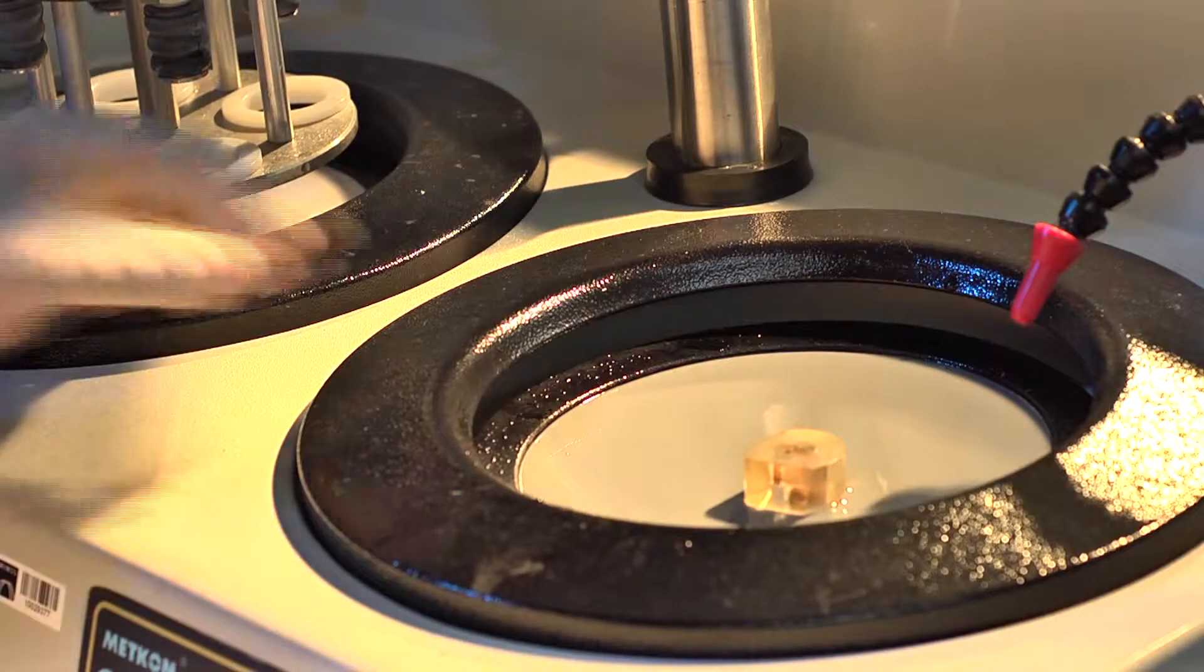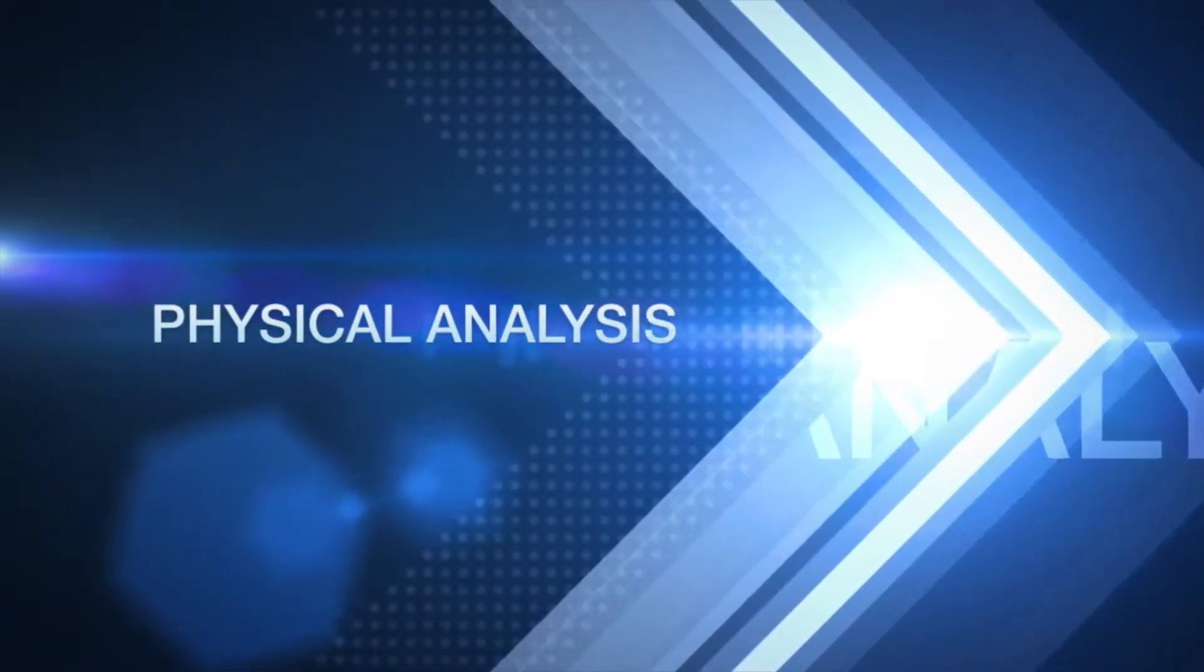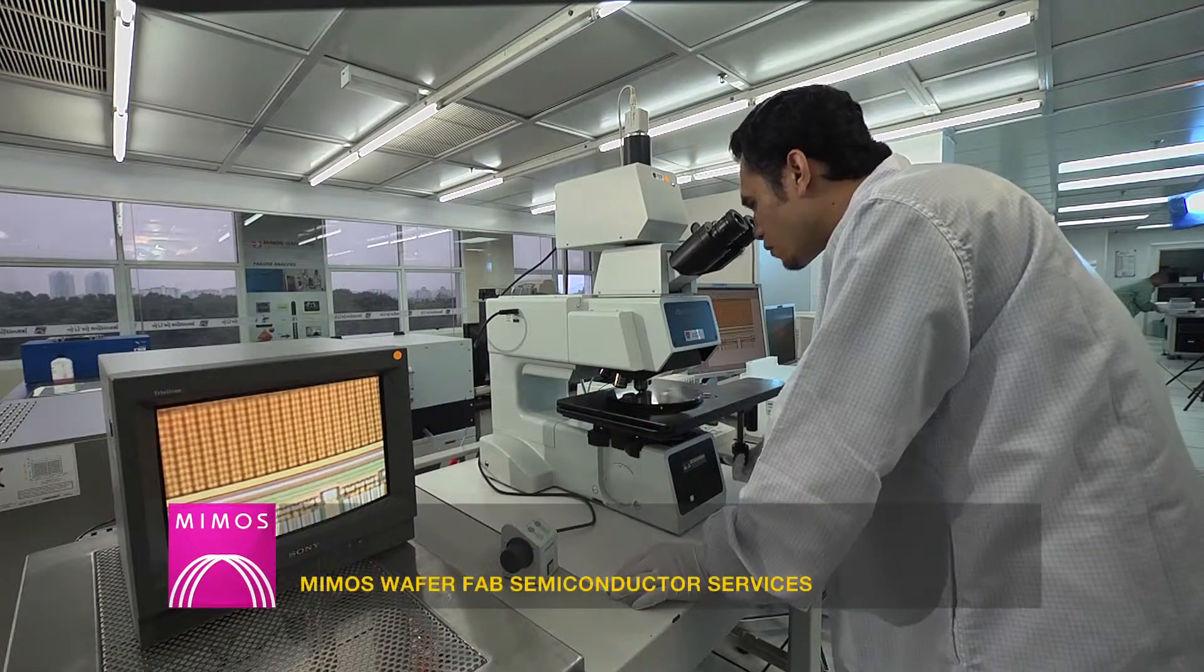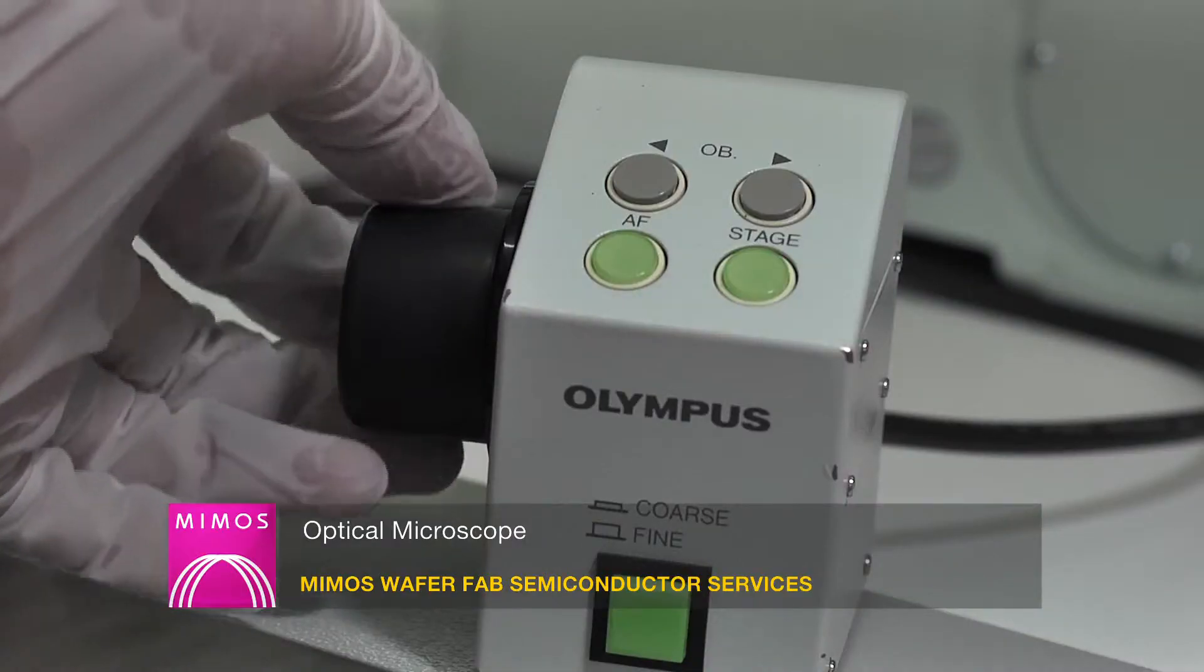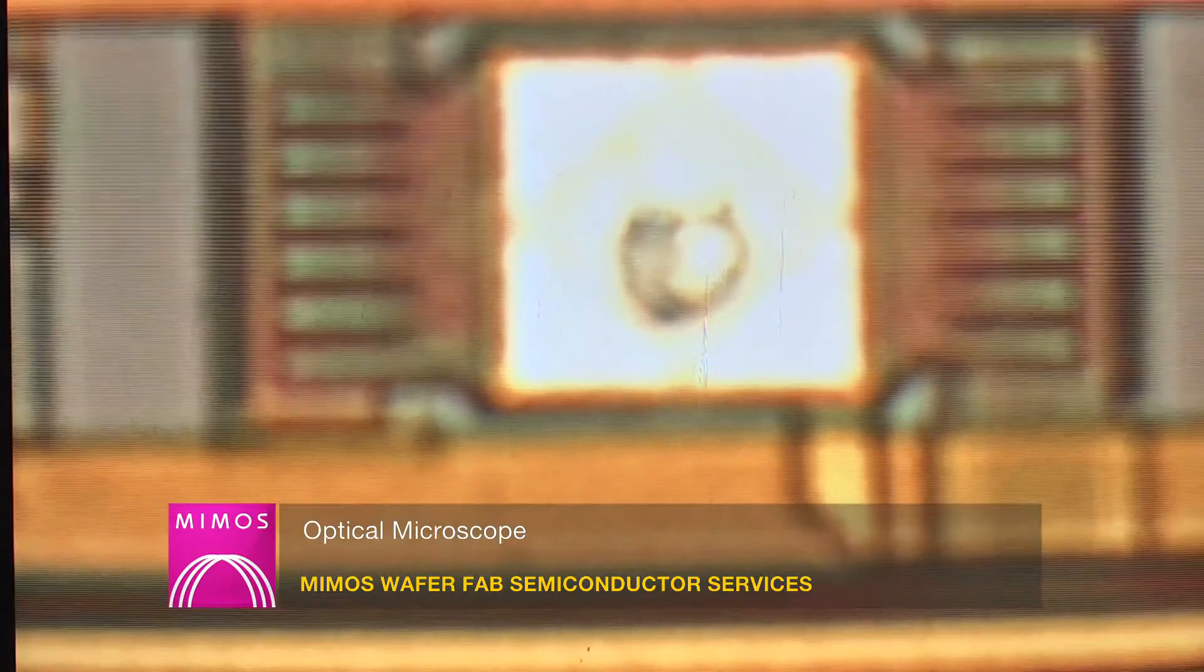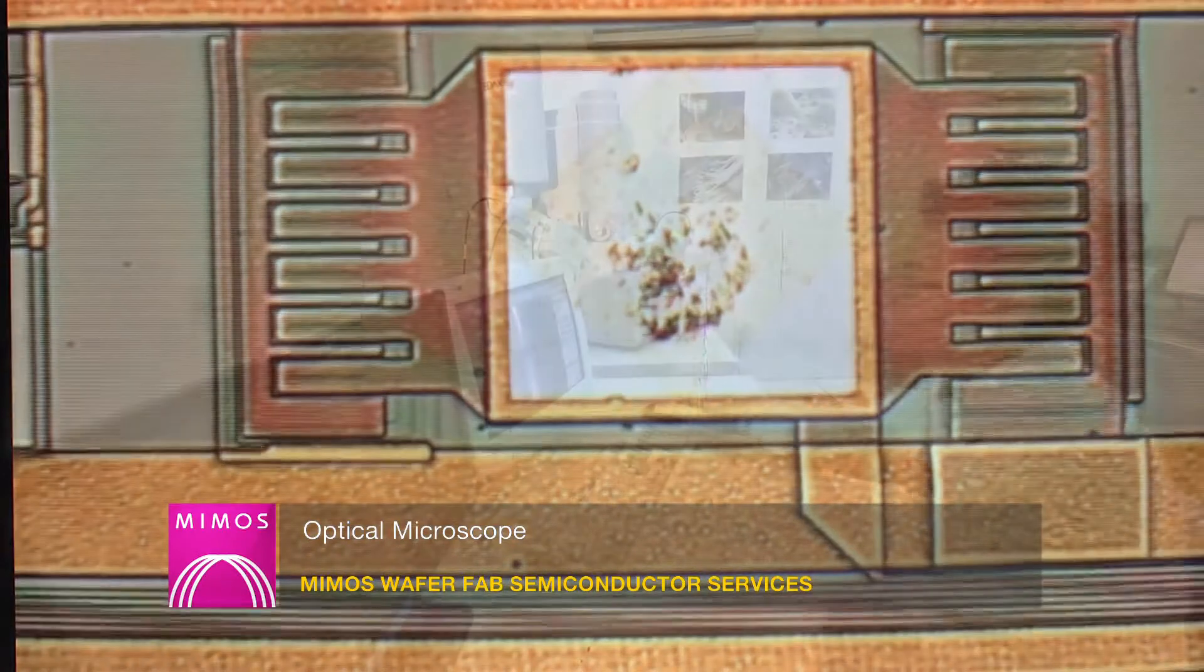Once failure has been electrically identified and localized, physical analysis is required to determine the root cause. Optical microscope is the most basic inspection tool to reveal physical defect. It is normally used for initial observation in order to quickly identify the failure mechanism.